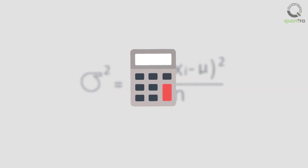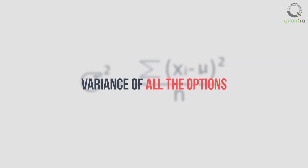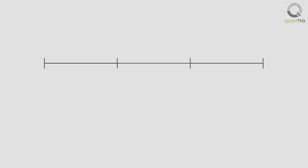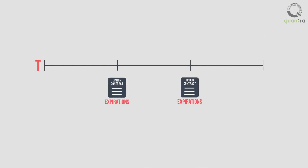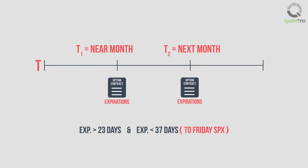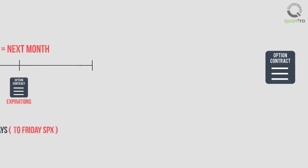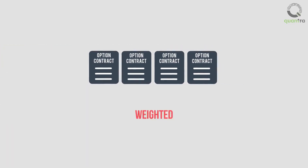While calculating VIX of the S&P 500 index, the variance of all the options included in VIX are taken into consideration. The variance of options with expirations of near month and next month — that is, the first and second month — are considered. Options with more than 23 days and less than 37 days to expiration are used to calculate the VIX. These SPX options are then weighted accordingly for further calculations.